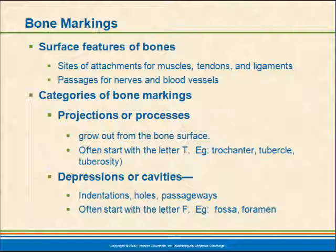There are several categories of bone markings. We have projections or processes, which are things that grow from the surface of a bone. These often start with the letter T — for example, trochanter, tubercle, or tuberosity.